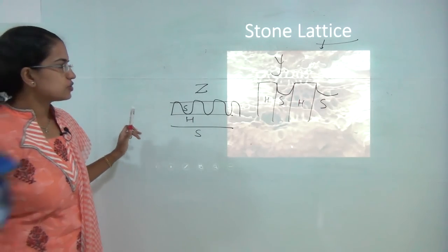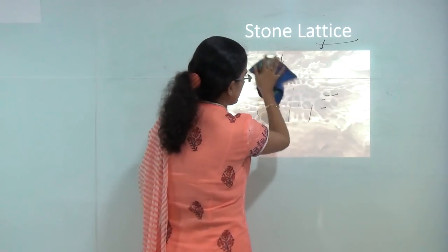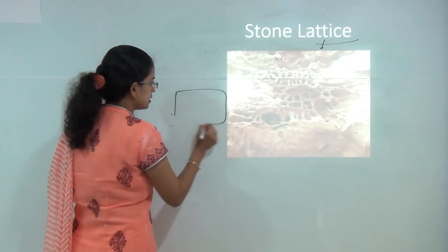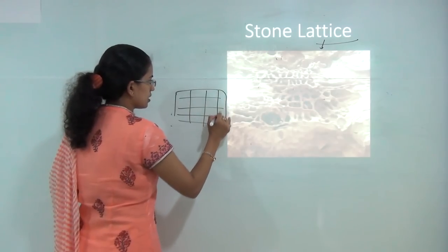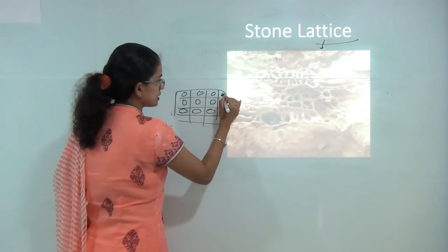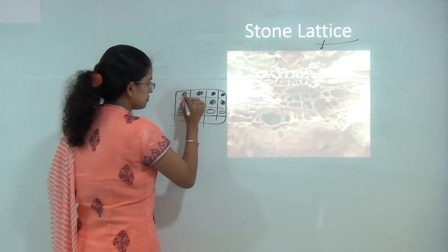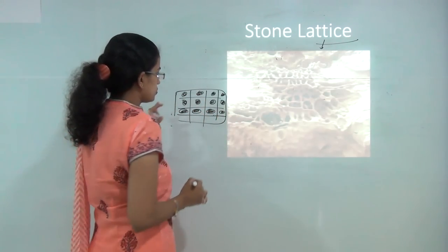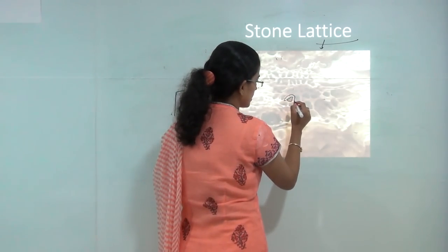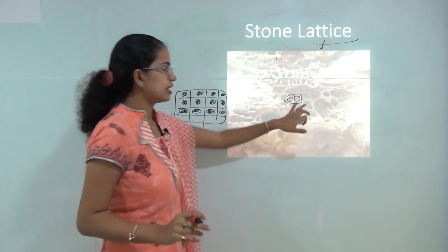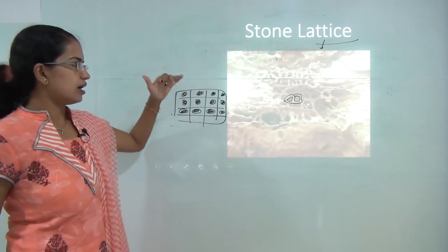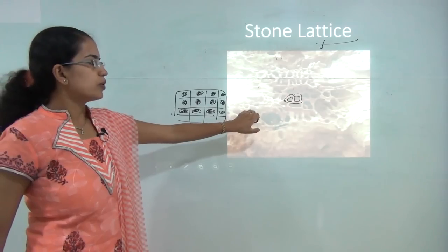The next is stone lattice. When wind blows through a rock region, it creates a kind of lattice structure — the center regions erode away, and the remaining structure appears as a mesh net. The center circular regions erode out while the surrounding region remains intact. Stone lattice is a pitted structure usually found in large rocks with high probability for differential erosion.